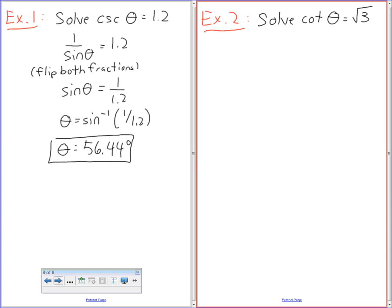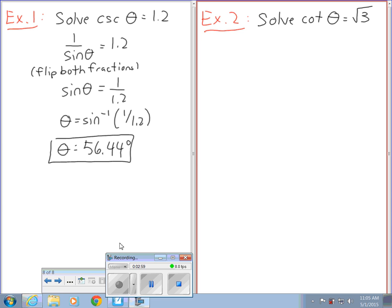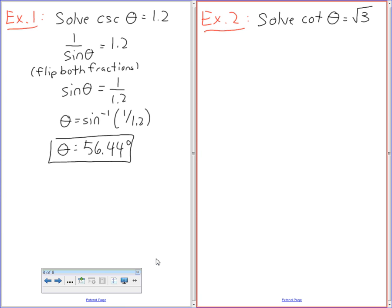So if you guys can solve cotangent of theta equals root 3, please. Can I get someone to be brave? Let's do the row. Can someone from the back row raise their hand and tell me what cotangent means, the same as what? Go ahead. 1 over tan. Wonderful.